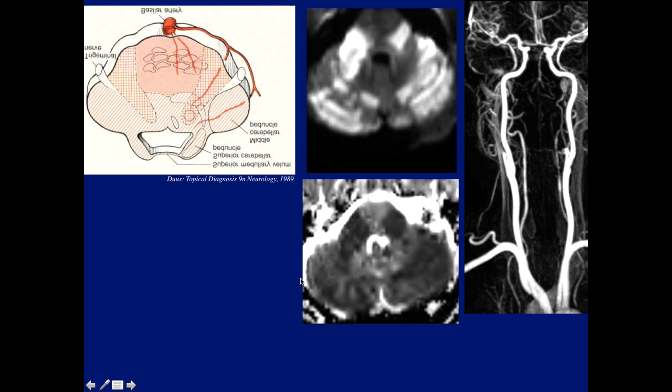Here's another stroke involving where the fibers from the trigeminal nerve will be coursing, in the territory of the short circumferential branches. This interesting case shows a patient with occlusion of both vertebral arteries, with strokes sparing the midline but involving the two lateral positions — the short circumferential territories were involved on both sides but the middle territory was spared.